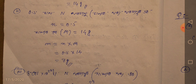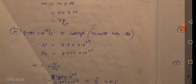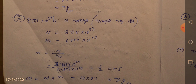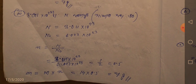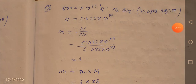For nitrogen, the molar mass is 14. For 7 grams, this year the number is 3.011 into 10 to the power 20 theta nitrogen atoms. The Avogadro number is 6.022 into 10 to the power 23. So n equals N by N₀. We got 0.5 mol. The molar mass of nitrogen atom is 14, and mol is 0.5. So we get 7 grams.